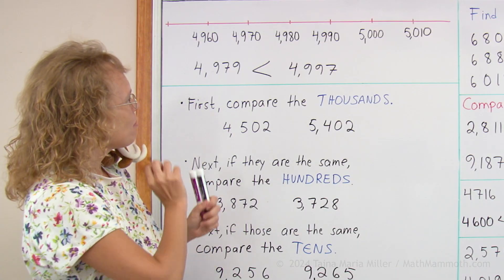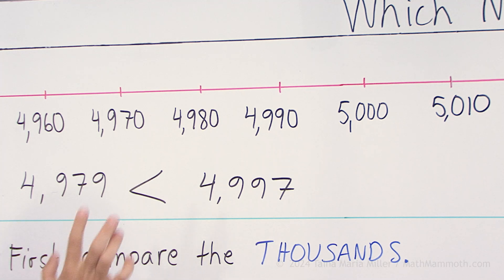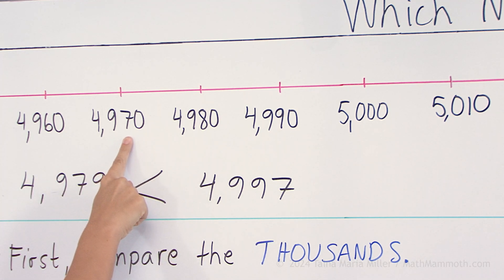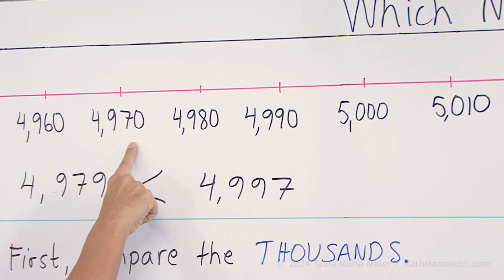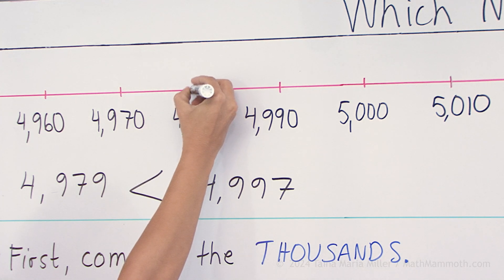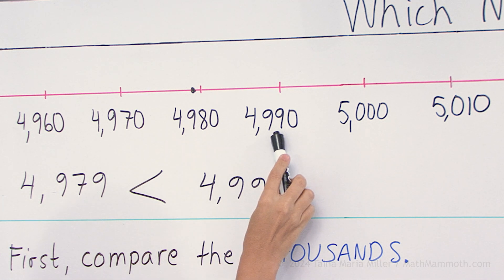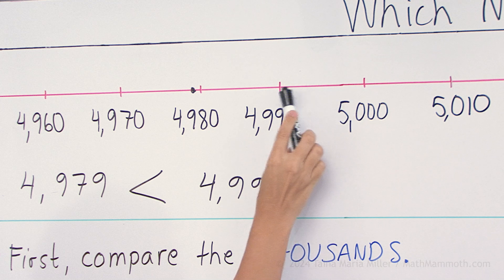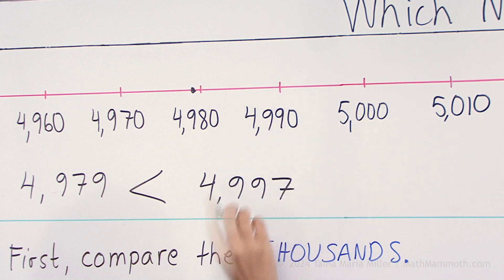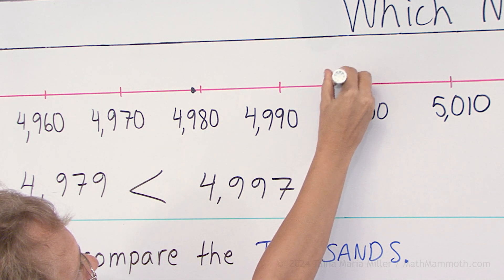Let's also mark those two numbers on the number line. Four thousand nine hundred seventy-nine — I will look for four thousand nine hundred and seventy. And then this was seventy-nine, which is just before eighty, so it would be somewhere there. And then four thousand nine hundred ninety-seven — I will find four thousand nine hundred ninety. And then there's ten in between, so go seven — it's a little bit past halfway. Somewhere there.